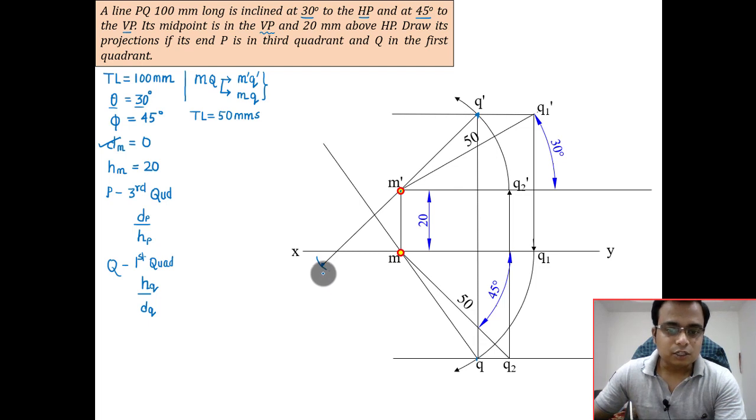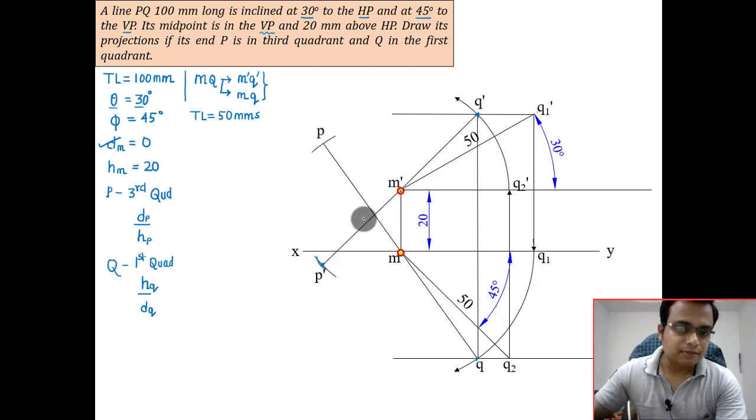Cut an arc over here - this point will correspond to p dash. With m as center and mq as radius, cut an arc over here - this gives you p. This q m line has been stretched, the front view has been stretched, and the top view has been stretched. Both of them lie on a single vertical line. That's the final front view and top view.